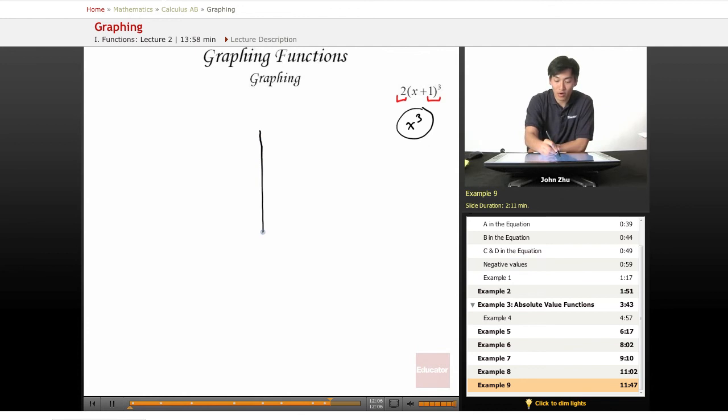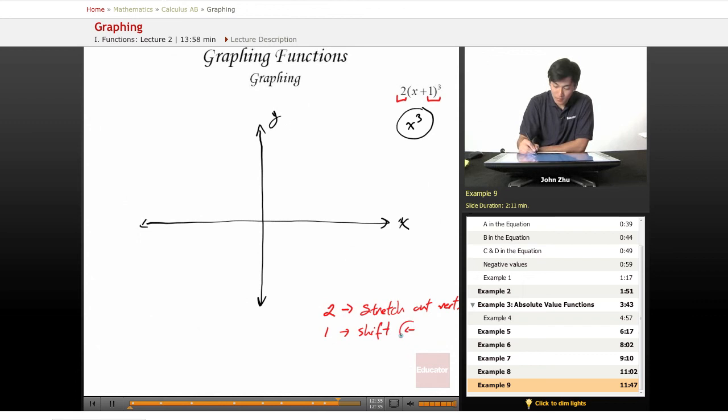We know what x cubed looks like already, so let's go ahead and draw our function. Here's x, here's the y-axis. The 2 will stretch out the graph vertically, and the 1 will shift it to the left by 1.